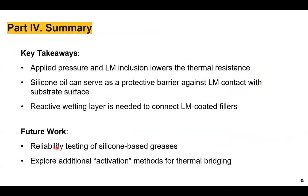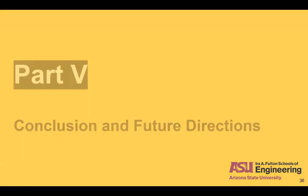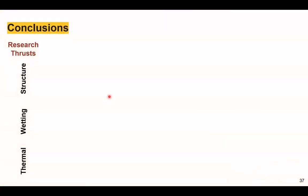Key takeaways for part four: applied pressure and liquid metal inclusions help with thermal resistance; silicone oil serves as a protective barrier against direct liquid metal contact; and a reactive wetting layer is necessary to connect liquid metal-coated fillers. In the future, I would like to study the reliability of these silicone-based greases in different environmental conditions and explore additional activation methods for thermal bridging. Finally, we've reached part five: conclusions and future directions, revisiting the research thrusts on composite structure-property relationships, liquid metal wettability on microparticles, and tunability of thermal properties.